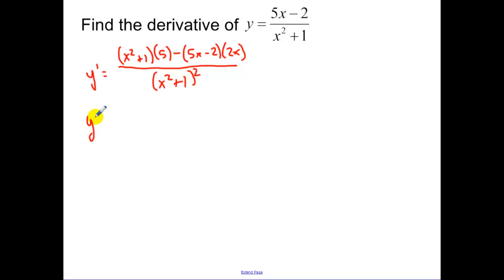So let's simplify the top. We can actually leave the bottom unsimplified. I'm okay with that, but let's simplify the top. So I have 5x squared plus 5 minus 10x plus 4x, and that should be a 10x squared. I was worrying about my negative too much. Okay, so y prime is equal to negative 5x squared plus 4x plus 5, and then it's okay if you don't multiply out the bottom.